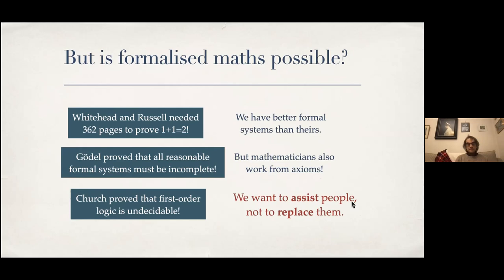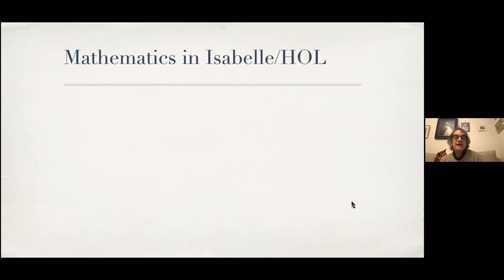If there is some gap in our axiom system having to do with incompleteness that is causing a thing we want to prove to be not provable, then this deficiency of the axioms will be evident to the mathematicians already, even before we formalize it — or at worst, in formalizing it we will discover the overlooked assumption. The last objection you see is simply that automated proof is undecidable. And that's all right. We are not trying to replace mathematicians altogether, and I think most mathematicians would be very depressed if we found a way of getting rid of their subject altogether.